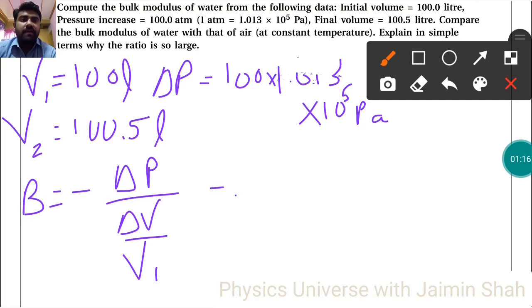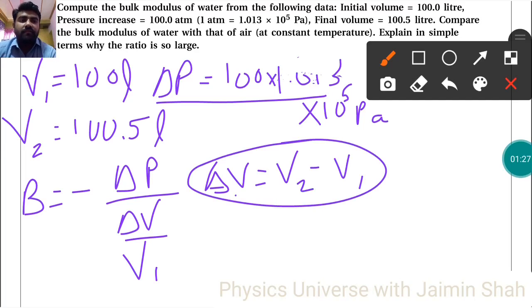We have delta P. What is delta V? Delta V equals V2 minus V1. We have V1 and delta P, so we can easily find the bulk modulus.